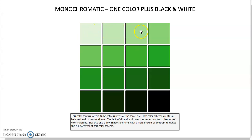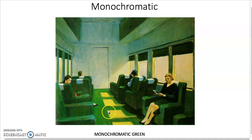This connects to the idea of a monochromatic color scheme — one color plus black and white. You can make an entire composition with black, white, and one color. This formula offers 16 levels of the same hue — all green, for example, at different intensities and shades. In a painting done this way, even a tiny sliver of red would pop out dramatically because red is the opposite of green on the color wheel, creating a focal point.